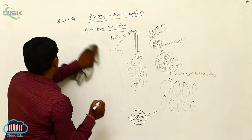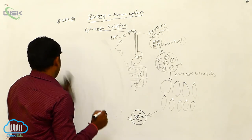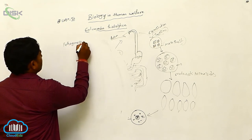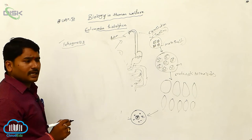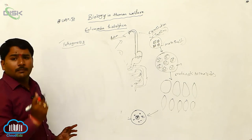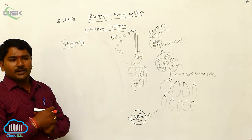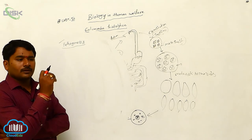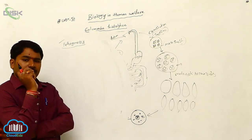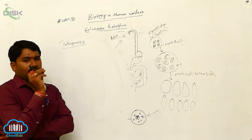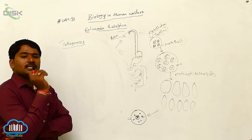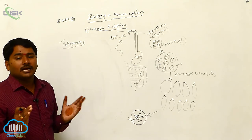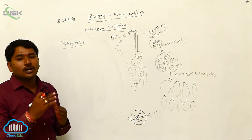Pathogenesis. By releasing the histolysin enzyme, the trophozoites damage the mucosa and submucosa.